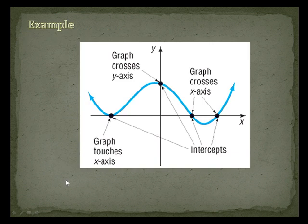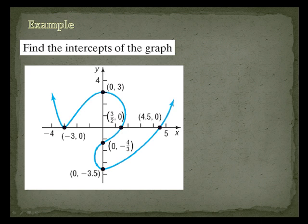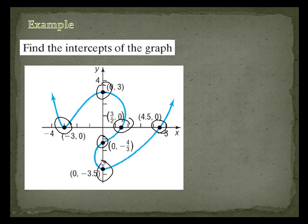Let's look at this example. These are x-intercepts — remember, it can touch or actually go through. Here's a y-intercept; another y-intercept could be where it just touches. For the example 'find the intercepts of the graph': the x-intercepts are easy to find — just look at your x-axis. Here's one at (−3, 0), the next at (3/2, 0), and the next at (4.5, 0). The y-intercept is exactly the same — wherever it touches or goes through on the y-axis.